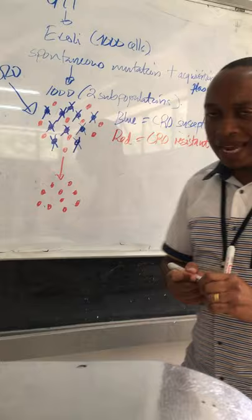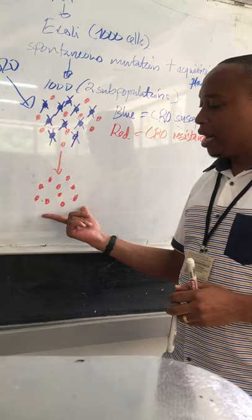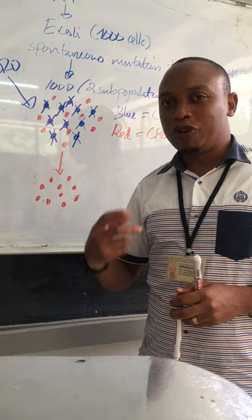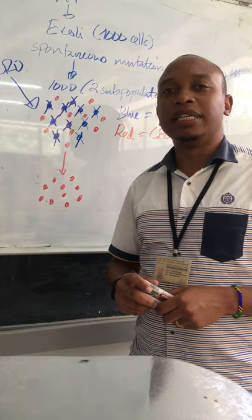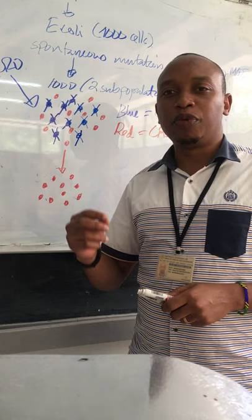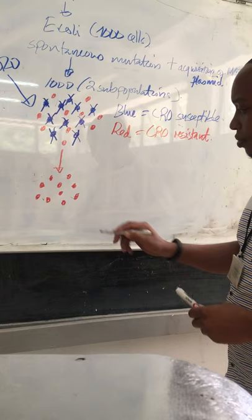Bacteria in the gastrointestinal tract are regarded as normal flora. But when they get the opportunity to reach another anatomical border site, they will potentially become pathogenic and result in causing disease. For example, if they reach the urinary tract system, they will cause urinary tract infection. If they enter the bloodstream, they will cause bloodstream infection.